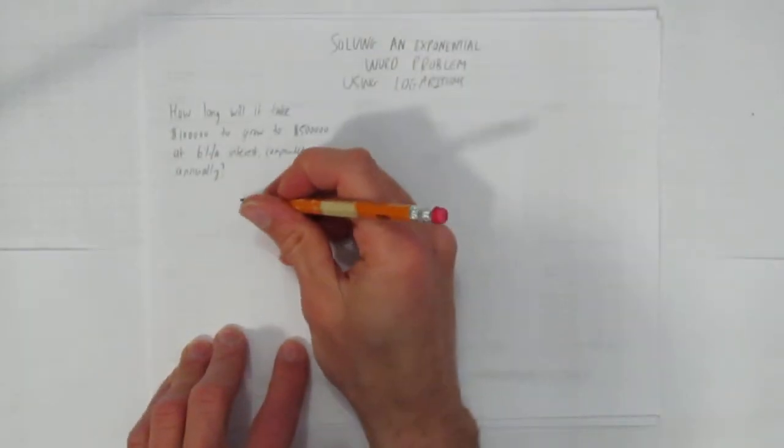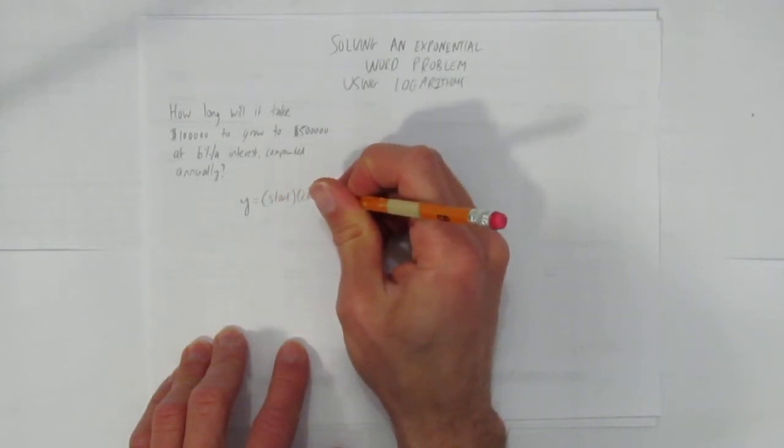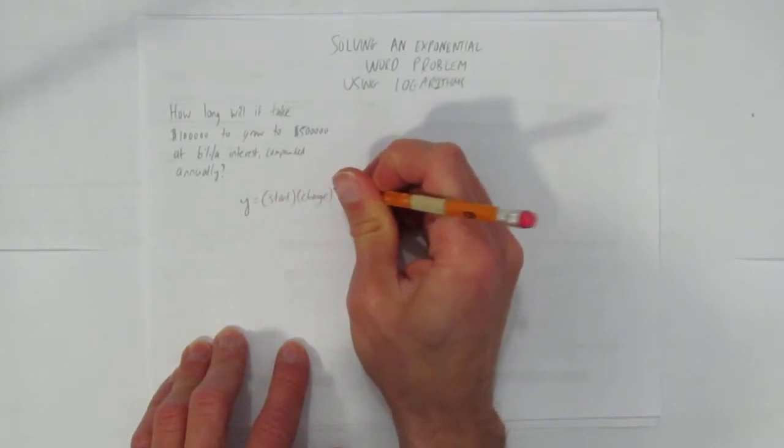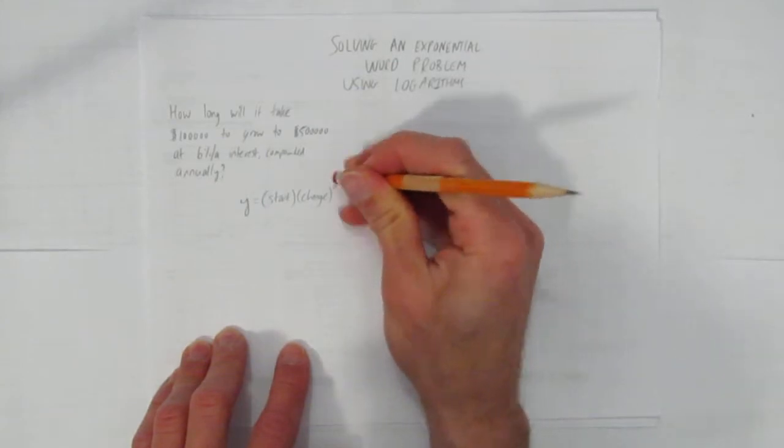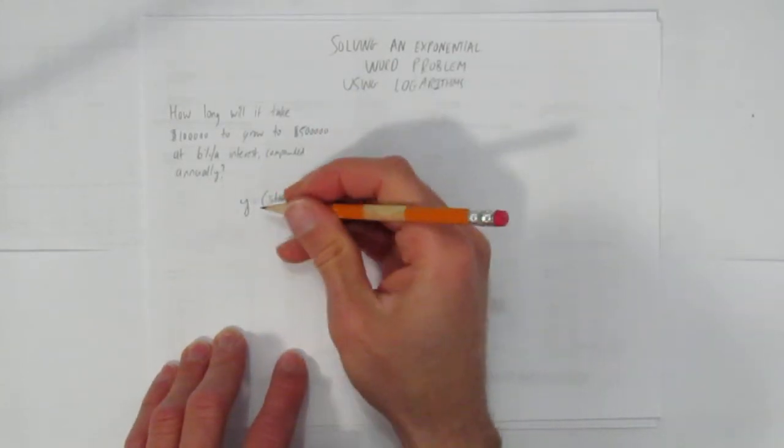I like to use the equation y equals start times change to the power of x, that's your general exponential equation formula. You can use a times b to the power of x. I just like this equation because I find it easy to sub in.